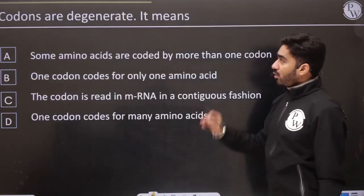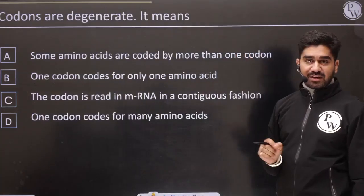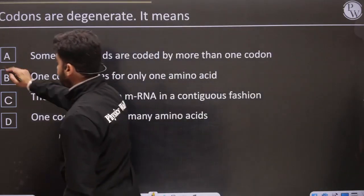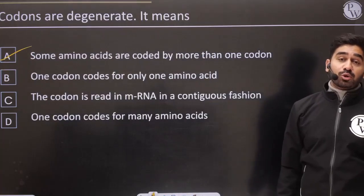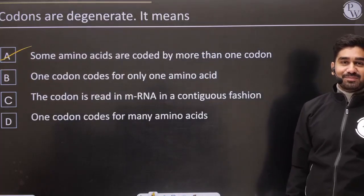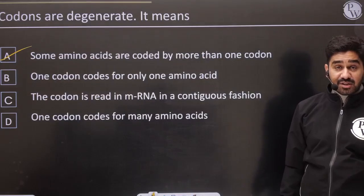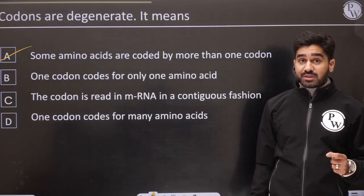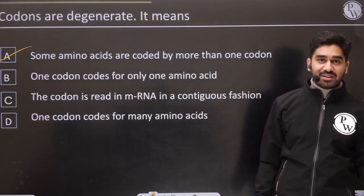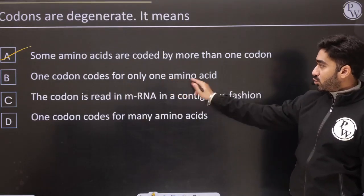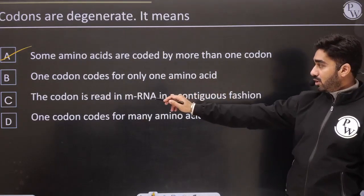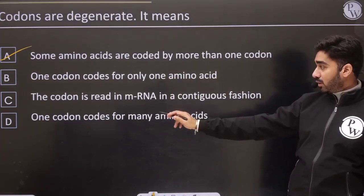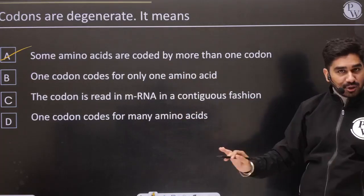Codons are degenerate — degeneracy of codons means that some amino acids are coded by more than one codon. We also said codons are non-ambiguous — meaning one codon codes for only one amino acid. Codons on mRNA are read continuously without a break. One codon coding for many amino acids does not happen.